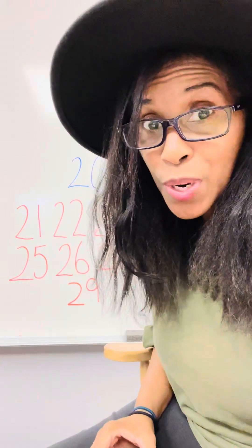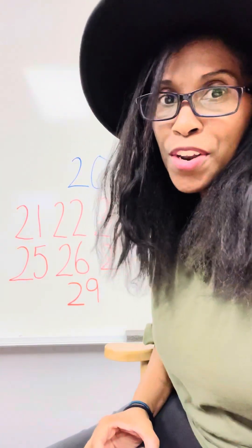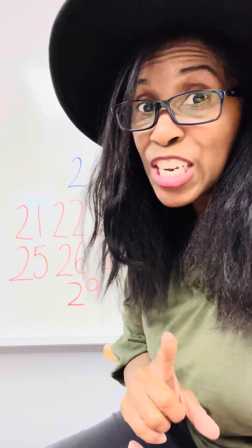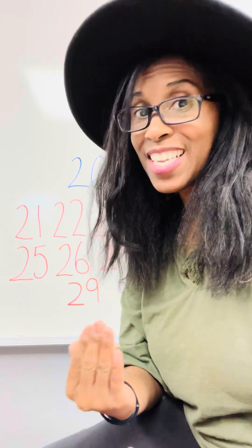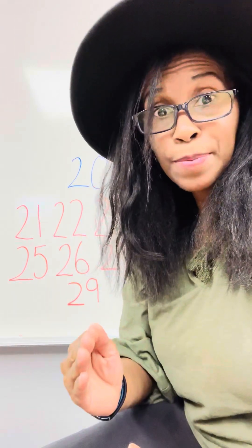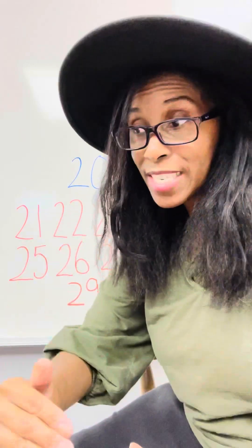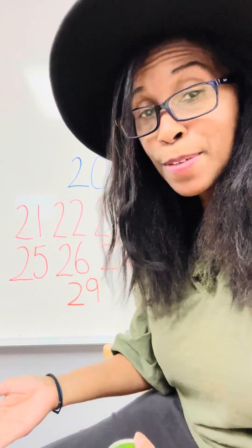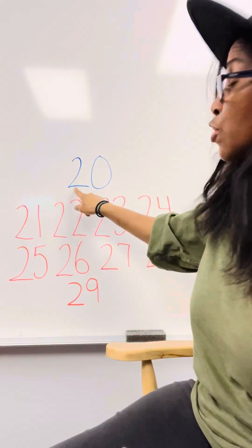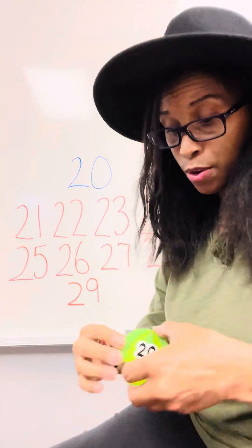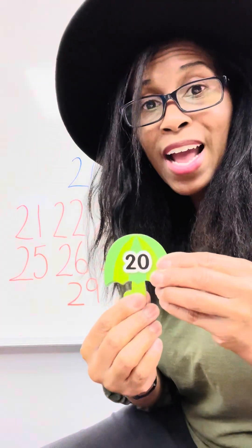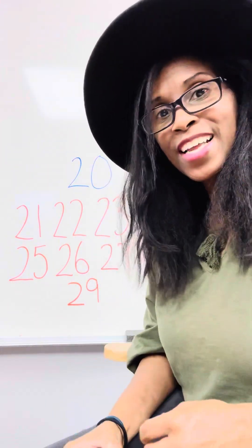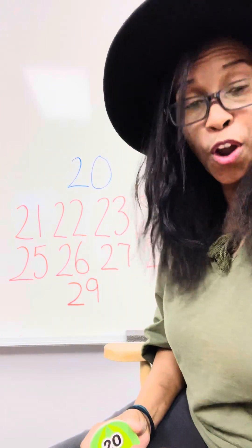You are going to see a two in every single number. So when someone asks you, "What number is 20?" you are going to automatically know that a two is in there. The two is in the front — every time you say 20-something, the two is always in the front. So for the number 20, it's a two and a zero.